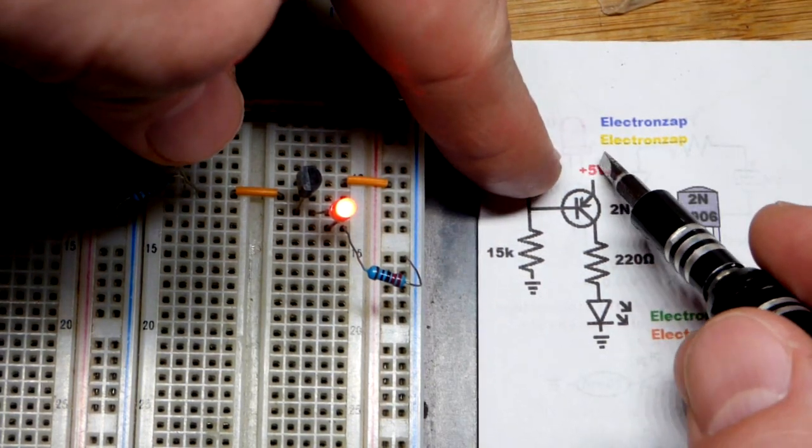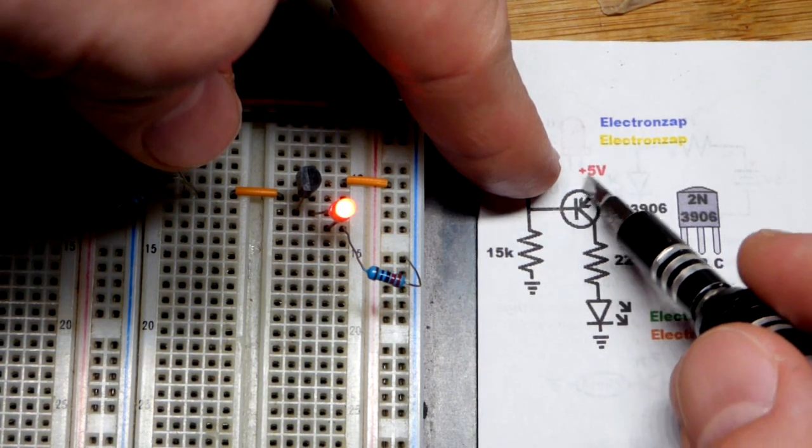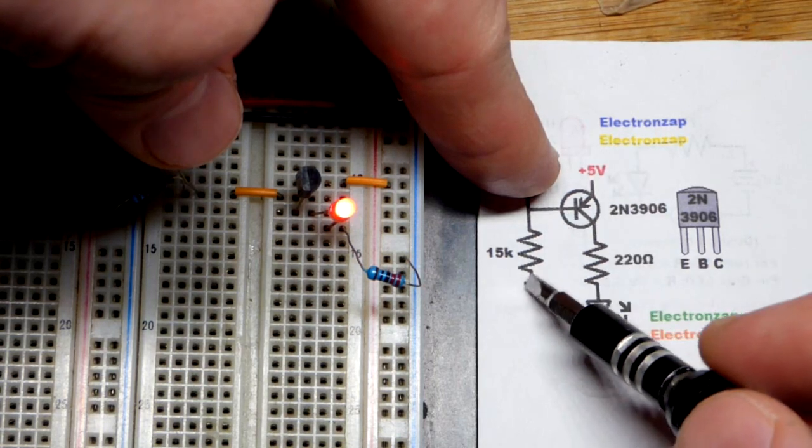Now we can see why the transistor is on. We have the emitter there, we're going to lose about 0.6 volts from emitter to base, then we've got the resistor. We've got a current path right there.